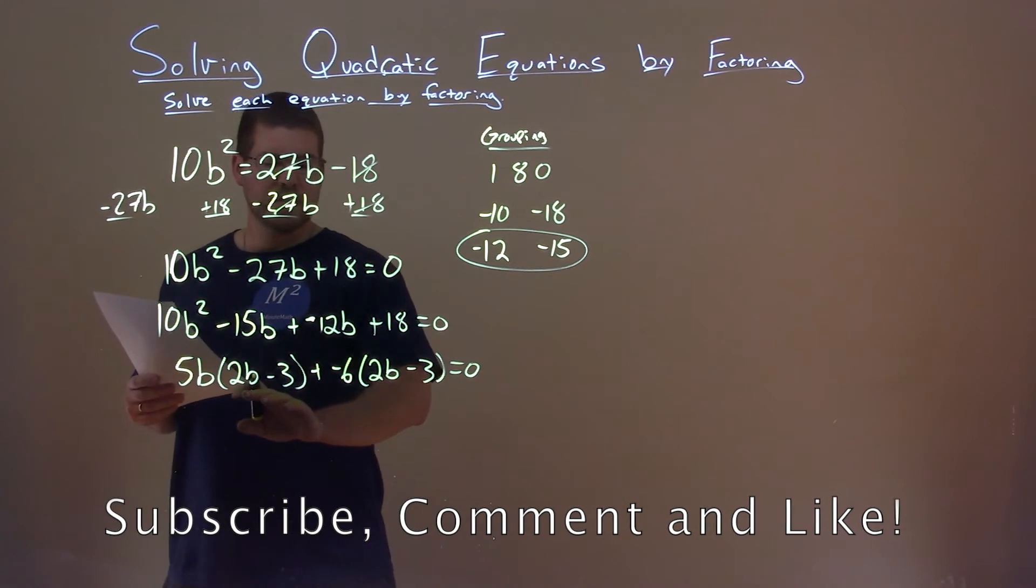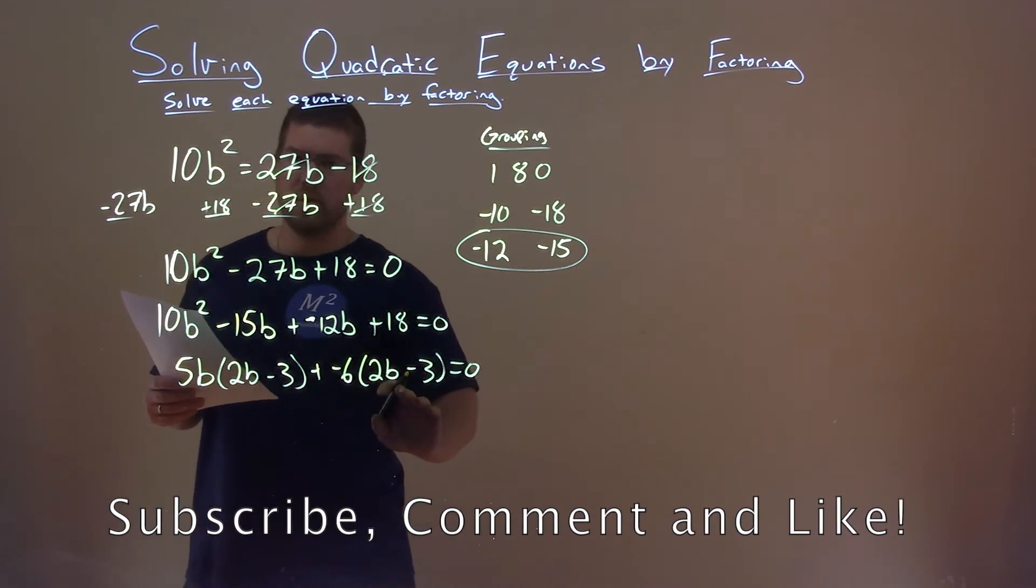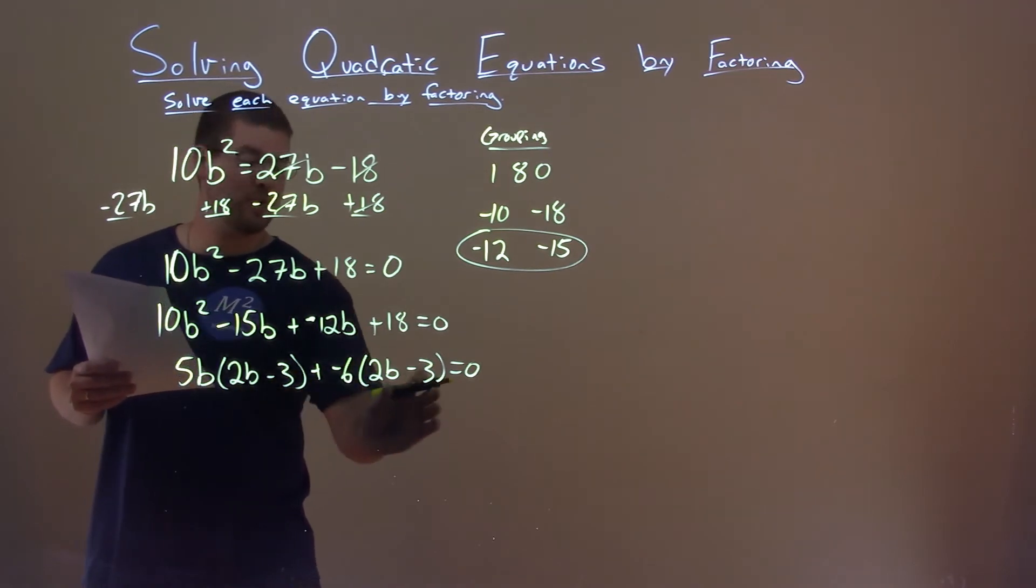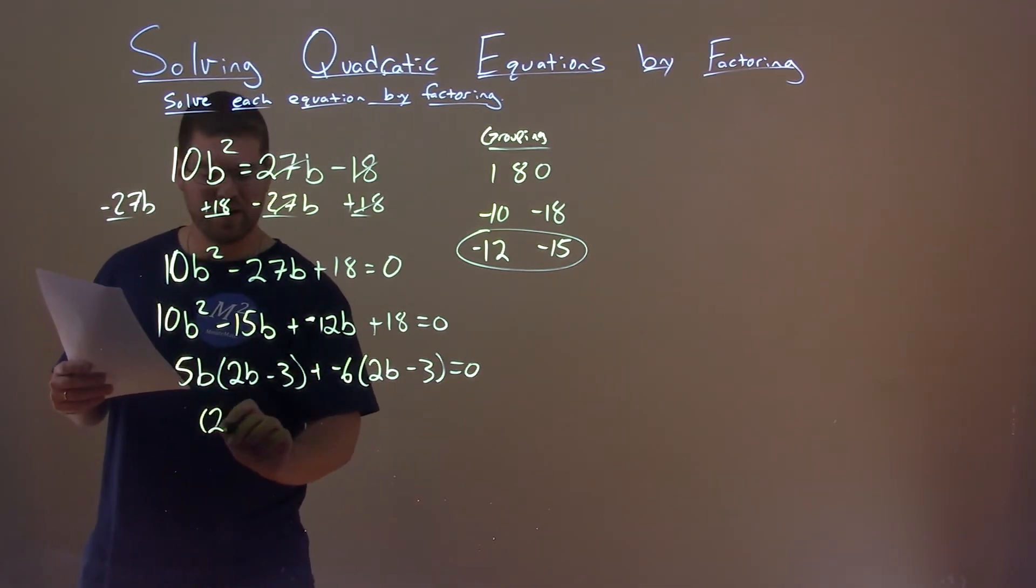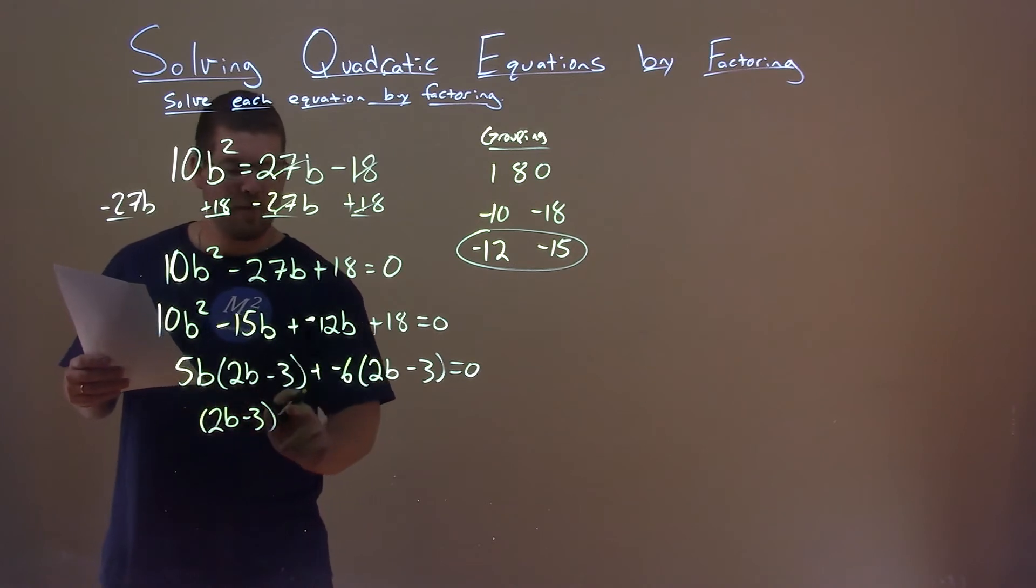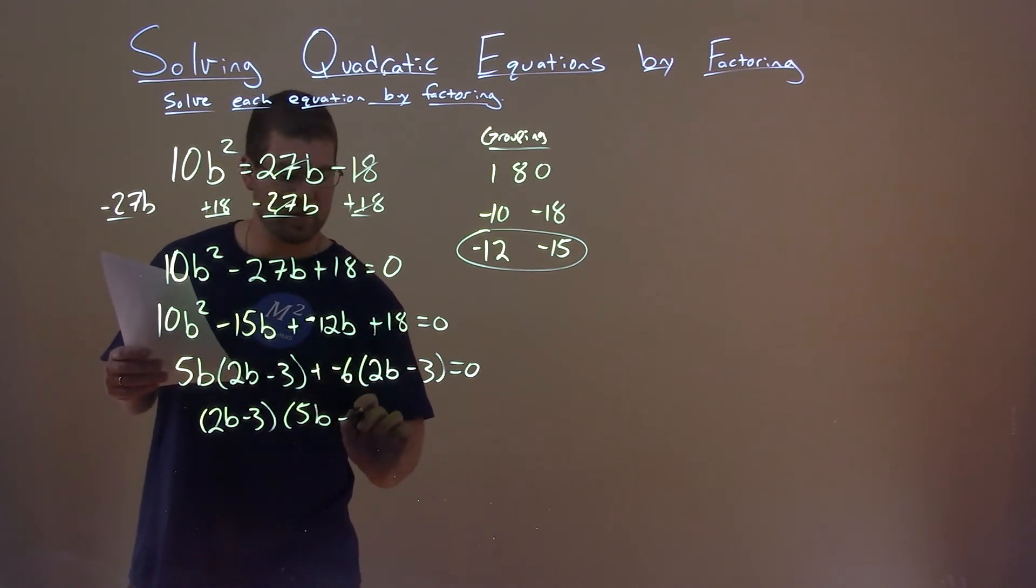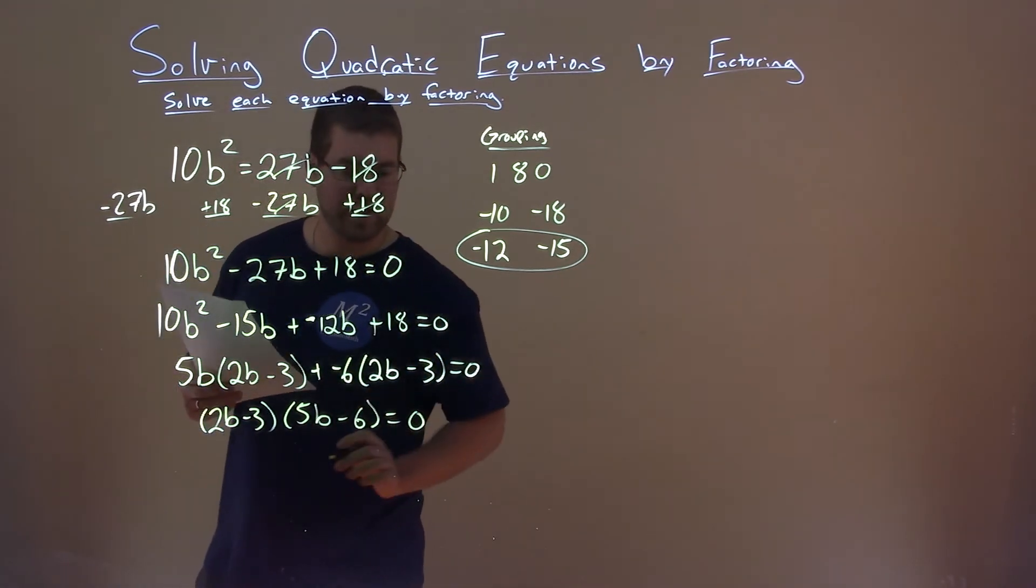So now we see a 2b minus 3 and a 2b minus 3. We can pull out a common factor there, or pull out the 2b minus 3 from both parts. 2b minus 3 here, and we're left with 5b here minus this 6. And that's equal to zero.